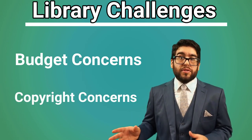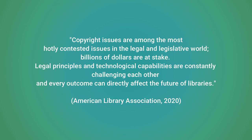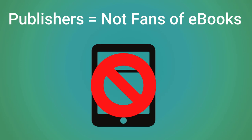The relationship between publishers and libraries has been tense in recent years. The American Library Association notes that copyright issues are among the most hotly contested issues in the legal and legislative world — billions of dollars are at stake. Legal principles and technological capabilities are constantly challenging each other, and every outcome can directly affect the future of libraries. Due to the potential of digital materials being copied and distributed at the cost of publishers, many publishers have been slow to allow libraries to circulate their books. Publishers such as Macmillan, Penguin, and Simon & Schuster held out until 2014 before allowing public libraries to circulate their e-books.